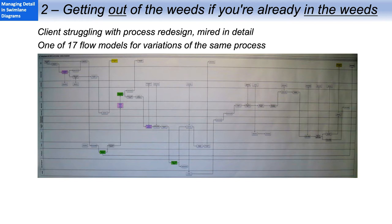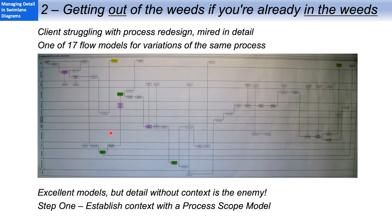Let's take a look at that first question, getting out of the weeds if you're already in. This is a real-life example, a banking client, a central bank in Europe, that was struggling with process redesign because they were in a lot of detail. They had 17 excellent flow models for variations of the same process, but that's just too much detail to understand what's really going on and segue into redesign. As usual, step number one was to draw a process scope model.